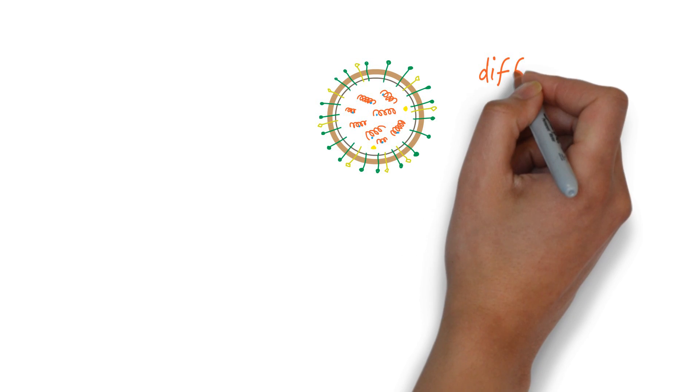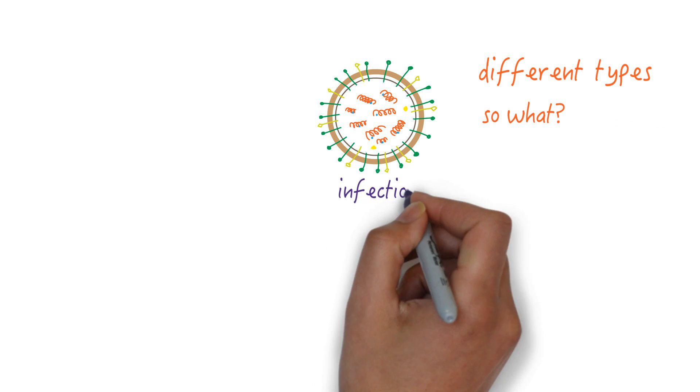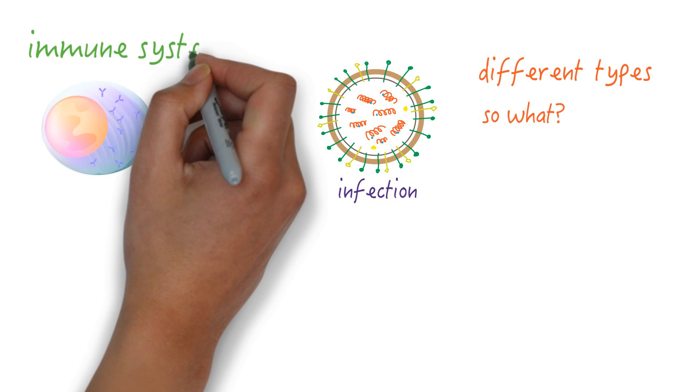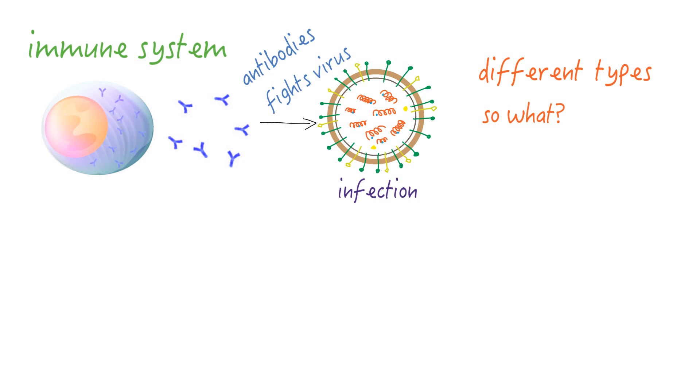Okay, so there are many different types of flu viruses out there. What's the big deal? Well, when people are infected by a particular strain of the flu virus, the body's immune system produces antibodies to fight that virus.